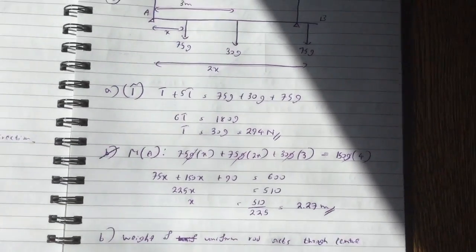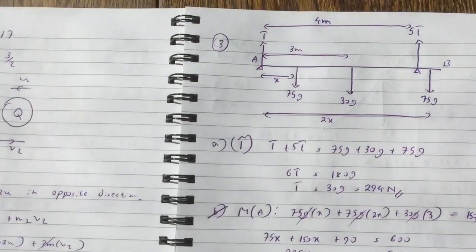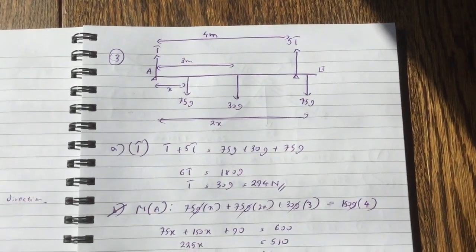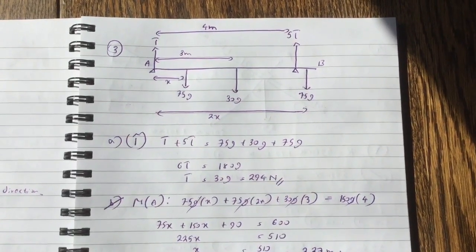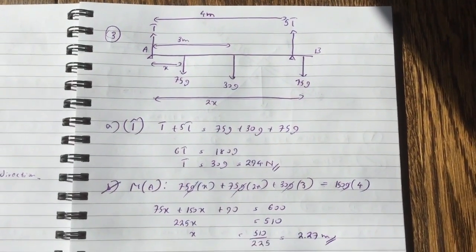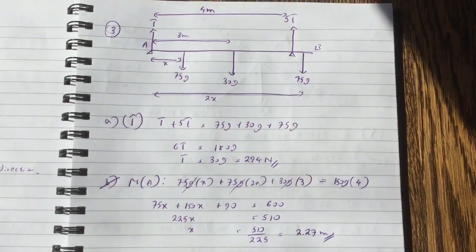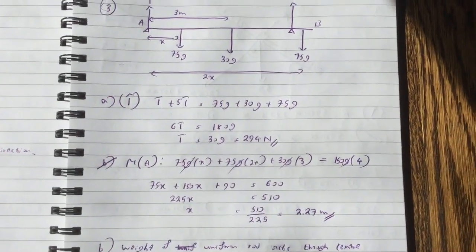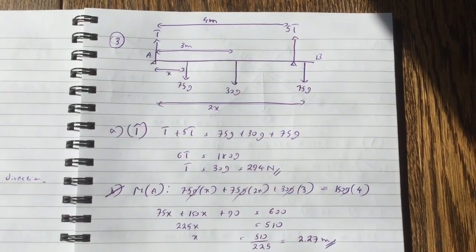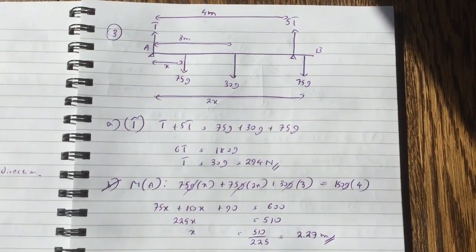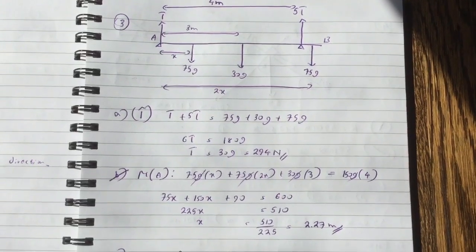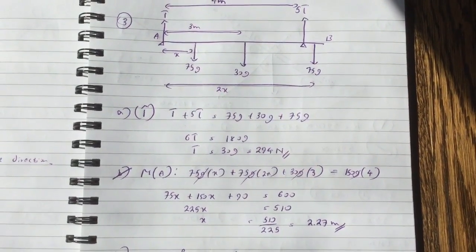Question 3 is a moments question. So I've drawn the diagram, all the distances, weights, reactions, etc. So for first part, if you just saw vertically, you've got T plus 5T equals 75g plus 30g plus 75g, and you get T equals 30g, which is 294 Newtons.